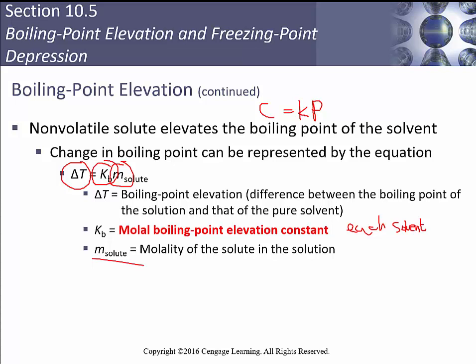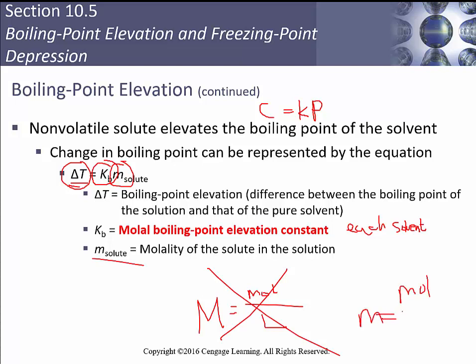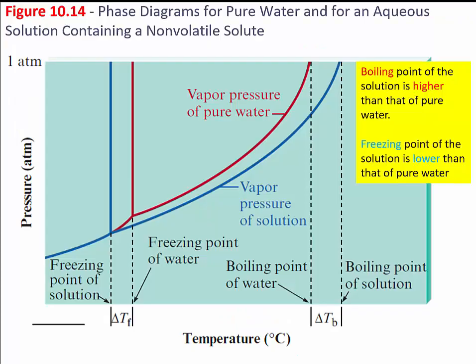We use molality because it doesn't change with temperature, and here we're deliberately changing temperature. We can't use molarity, which is moles per liter — that's out. We have to use molality: moles per kilogram of solvent.